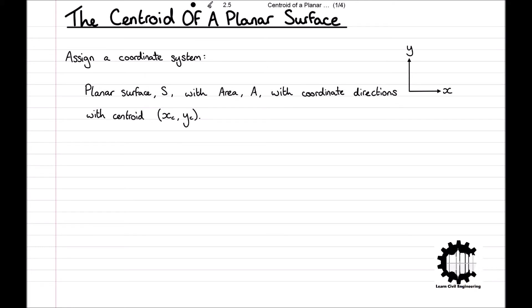The position of the geometric centre of the surface is defined as XC equals A to the power of minus 1 times by the surface integral of X with respect to A — in other words the surface integral of X with respect to A divided by the area — and YC is equal to A to the power of minus 1 times by the surface integral of Y with respect to A.